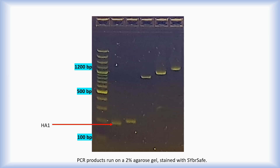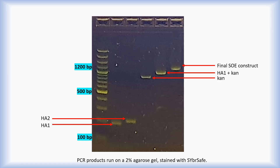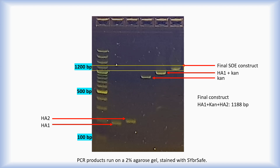The PCR product for Homology Arm 1 is of the expected size. The same can be said for Homology Arm 2. The Can PCR product, as well as Homology Arm 1 with Can, and the final construct consisting of Homology Arms 1 and 2 with Can, are also the correct size. The final product is just under 1200 base pairs in size.